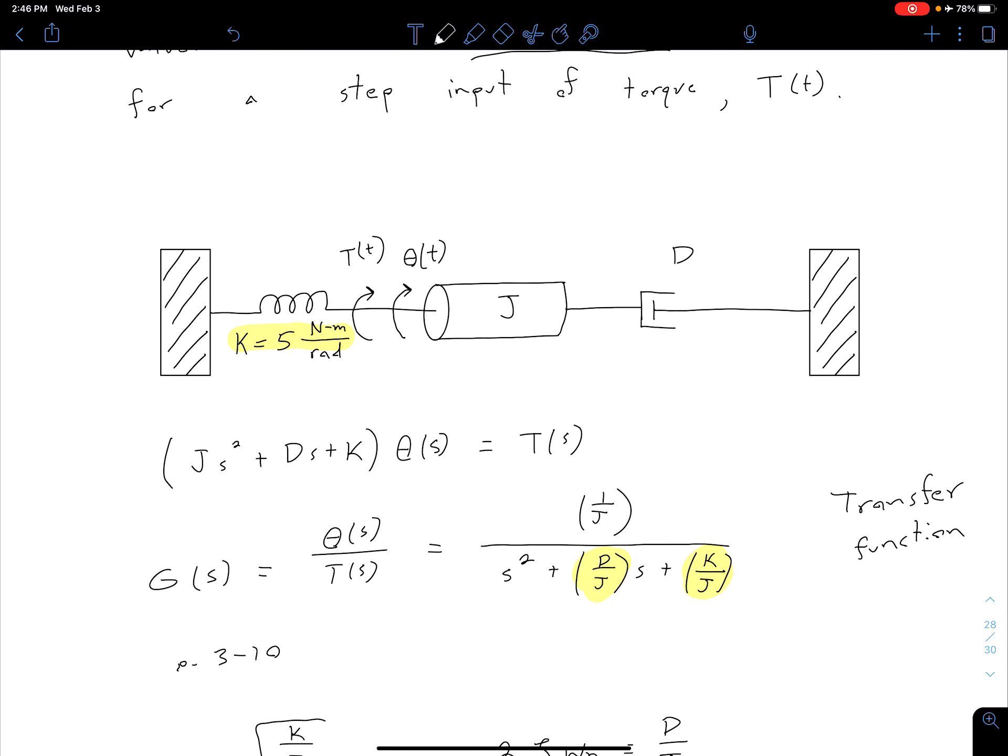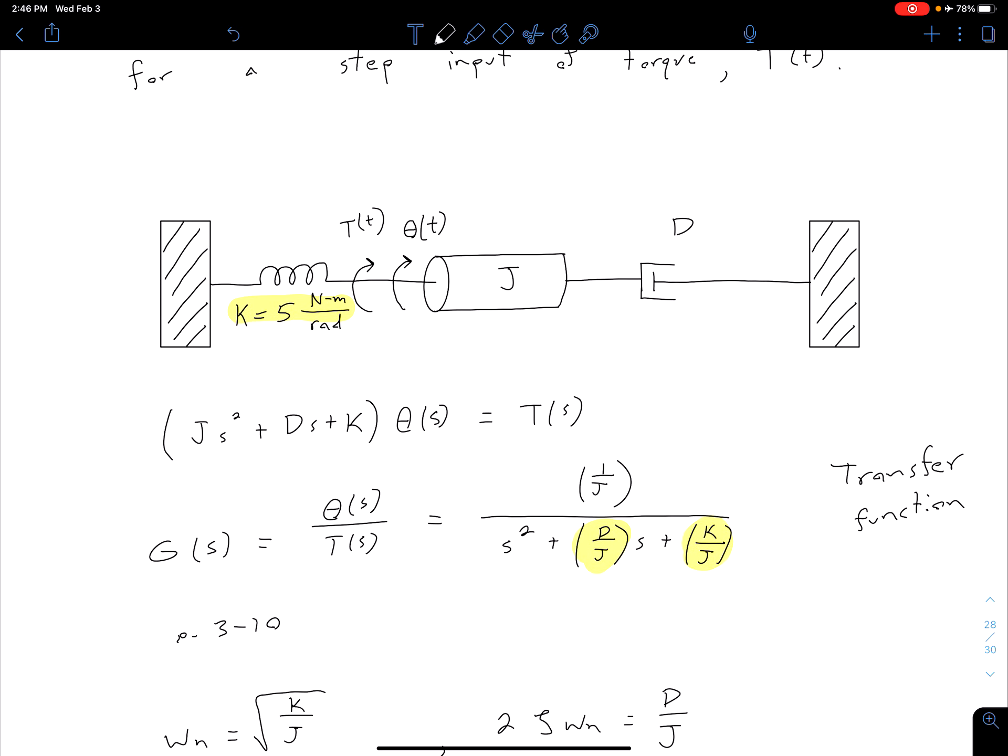One other thing to note is instead of going through this analysis what we could have done is we could have set up this system in a lab for instance and we could have measured the characteristics. So we could have measured our percent overshoot, our rise time, our settling time, our peak time. Now depending on the setup this might be a little bit difficult to measure and I'm not as used to dealing with mechanical systems in the laboratory so you might need some special equipment to be able to measure it accurately. But for instance,